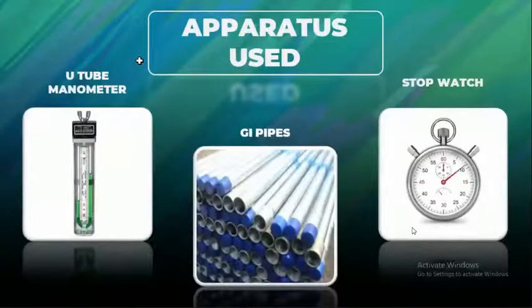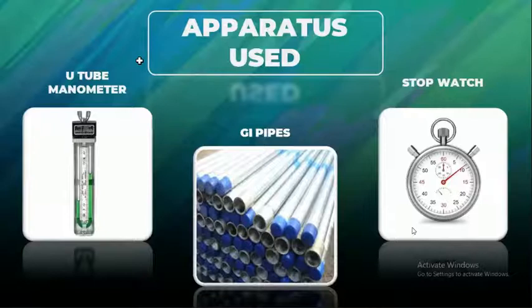Now I will discuss the apparatus used in this experiment. A U-tube manometer measures the differential pressure. A stopwatch measures the time taken for the rise of 10 cm in collecting tank.